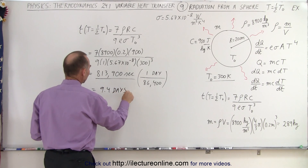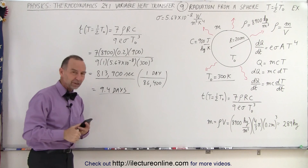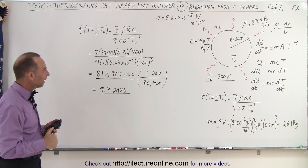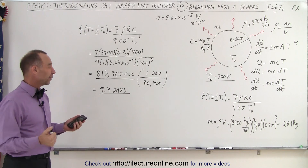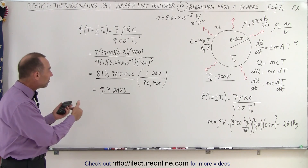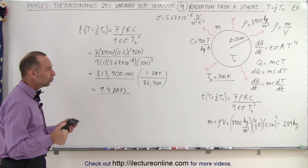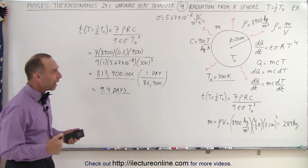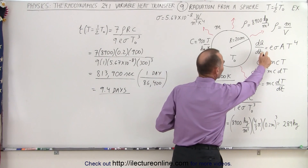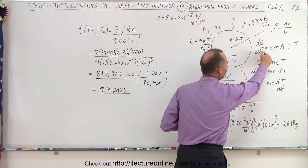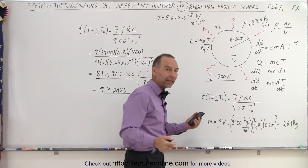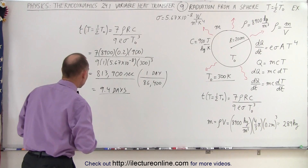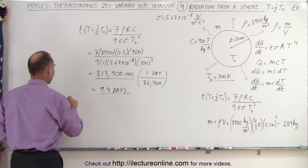That seems very odd, just very odd — it seems like way too long. So what I did then is figure out: is that a reasonable value? To do that, let's see how much heat would be radiated out from a sphere like that initially. Let's go ahead and take our dQ/dt equation and figure this out.